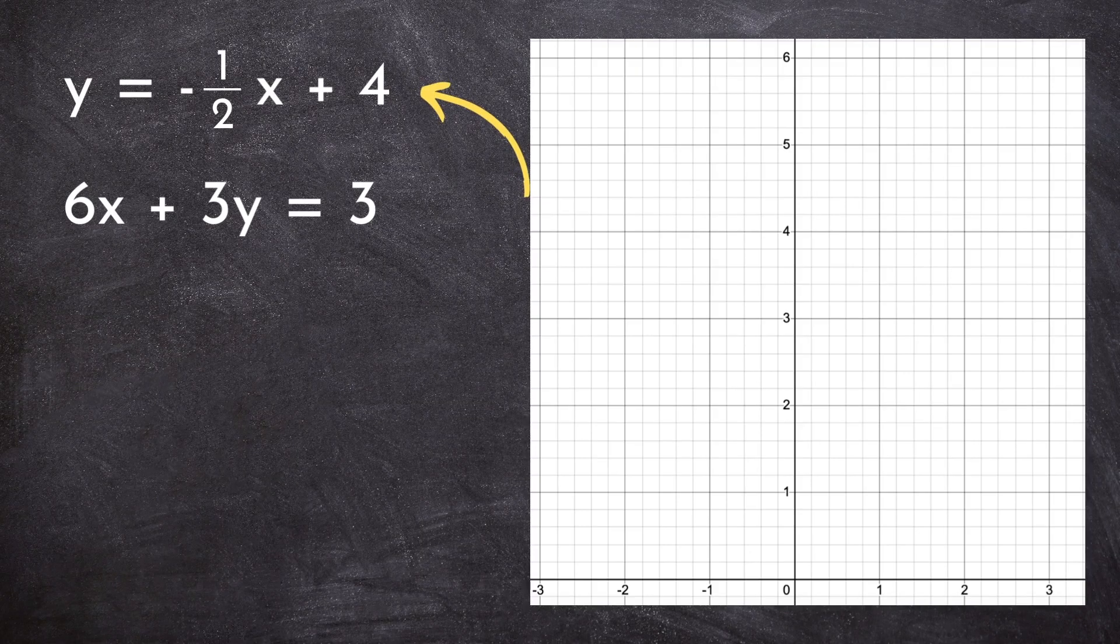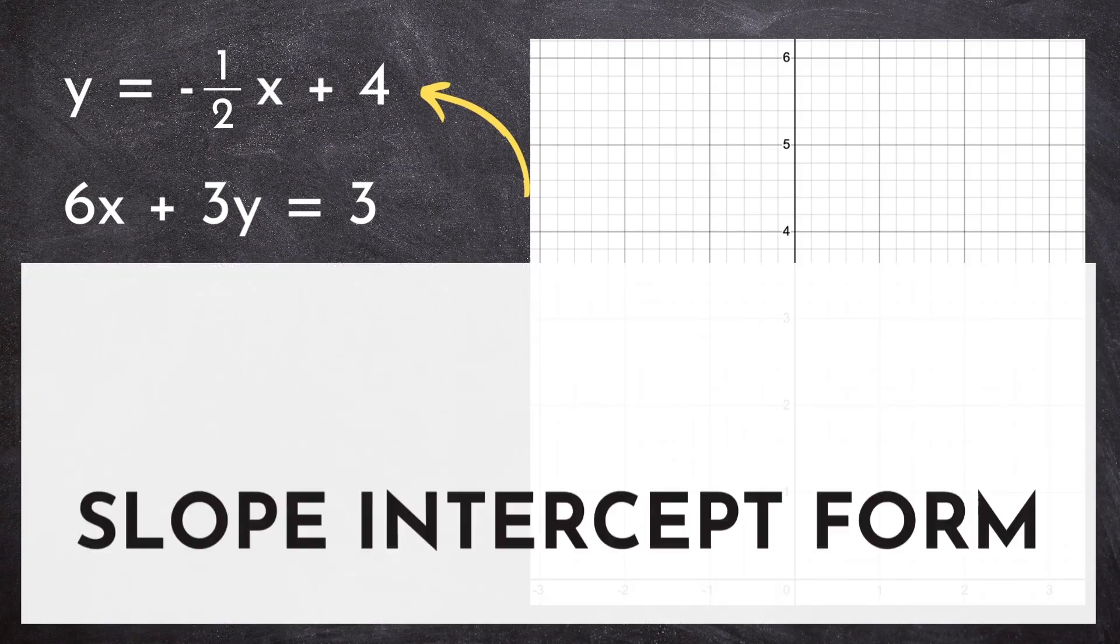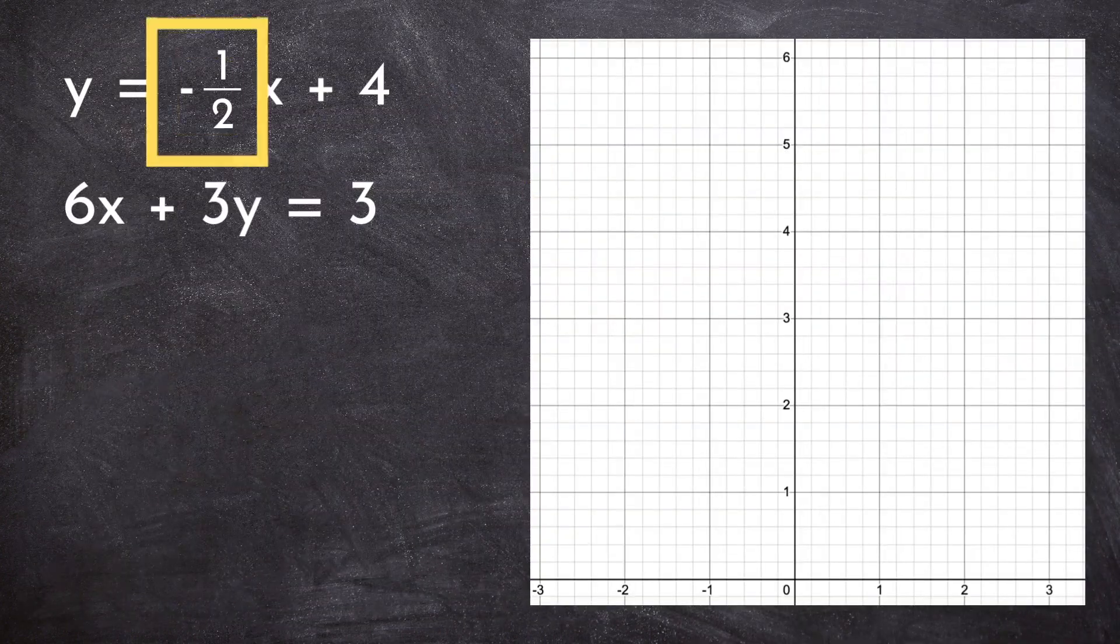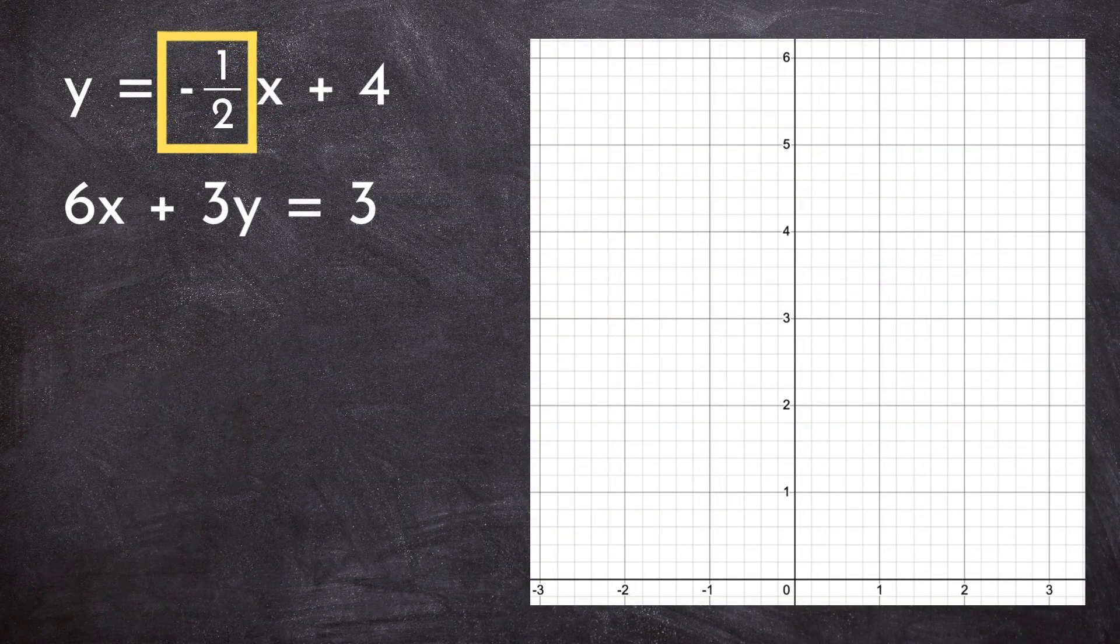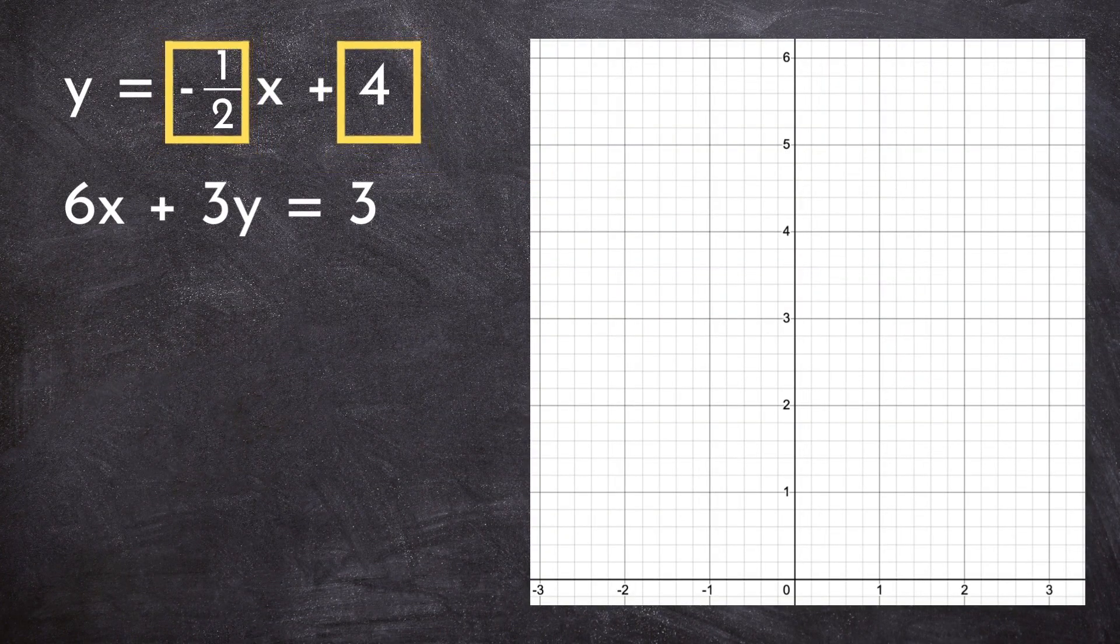Graphing two lines is no different than graphing one line, aside from there's two of them. But let's not let that scare us off. Let's start by looking at this first line. Luckily, this line is in slope-intercept form, meaning we can easily pick out the slope of negative one-half and the y-intercept of four.